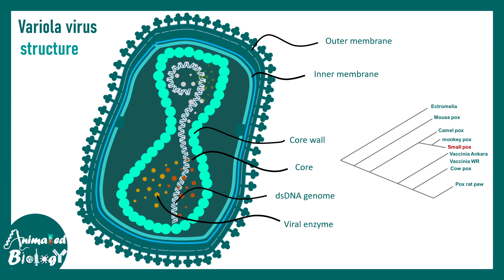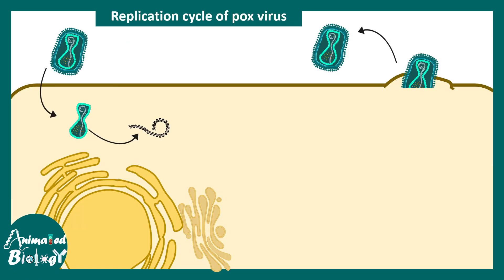It's important to note that the smallpox virus has many cousins we've looked at before, like monkeypox virus and chickenpox virus. This is how the replication cycle works: the virus enters the cell and releases its DNA from the core.